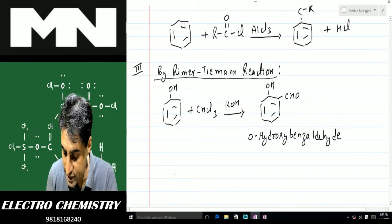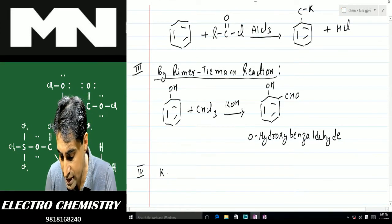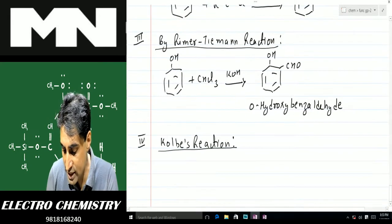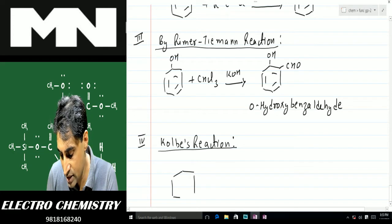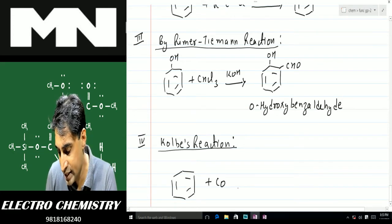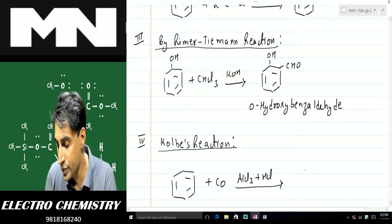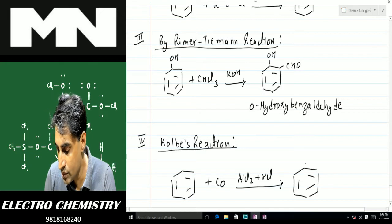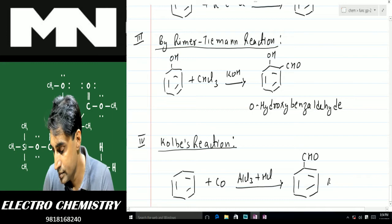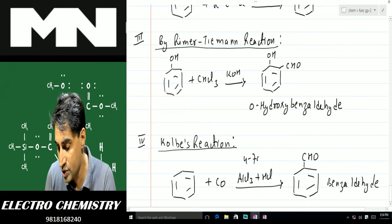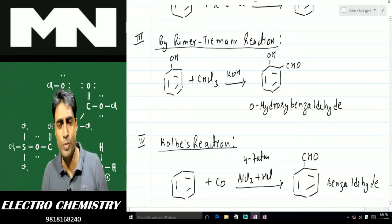The fourth method is the Gattermann-Koch reaction. In this case, a benzene molecule is reacted with carbon monoxide in the presence of AlCl₃ and HCl — CO gets added to the benzene ring and you obtain benzaldehyde (CHO attached to ring). In some books, a pressure of 4 to 7 atmospheres is also mentioned, which makes the reaction more spontaneous.